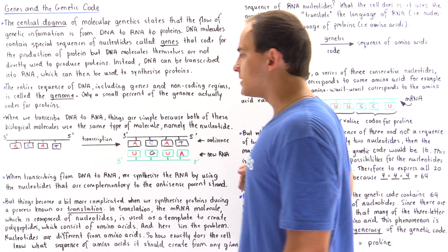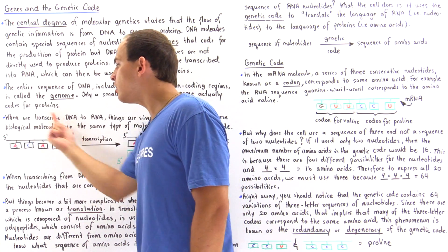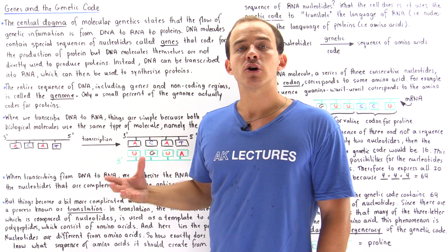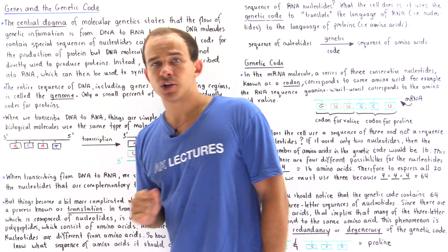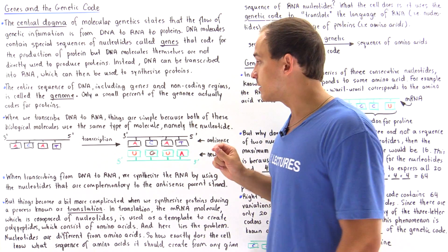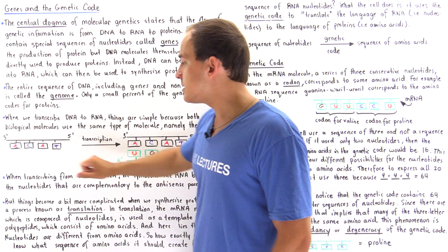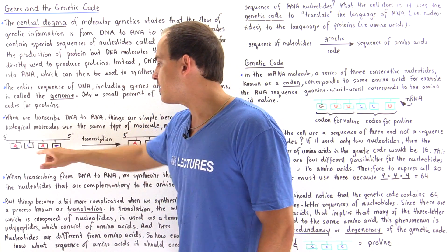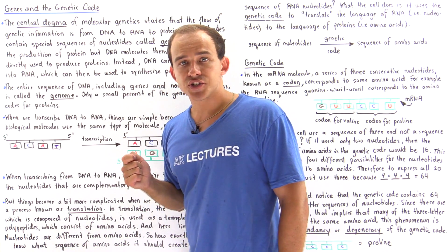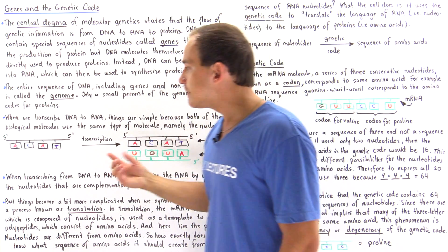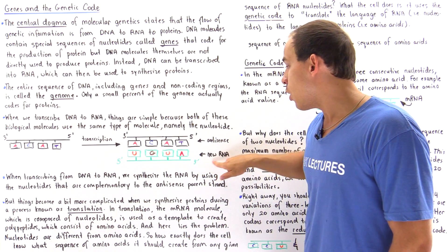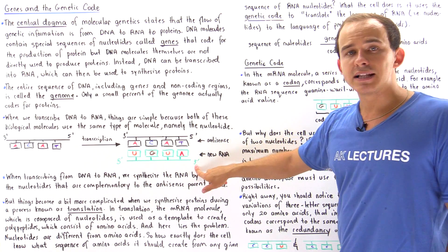Let's take a look at the following diagram. Suppose we have a DNA molecule that we want to use as the template for transcription. This strand is commonly known as the antisense strand, which consists of adenine, cytosine, adenine, and thymine nucleotides. When transcription takes place, the cell transcribes beginning at the 3' end and ending at the 5' end, so that the new RNA is synthesized beginning at the 5' end and ending at the 3' end.